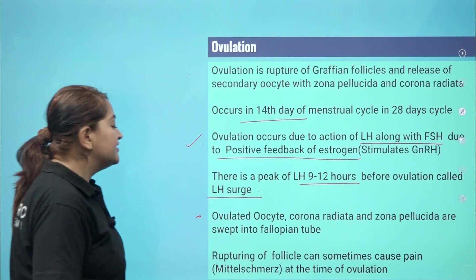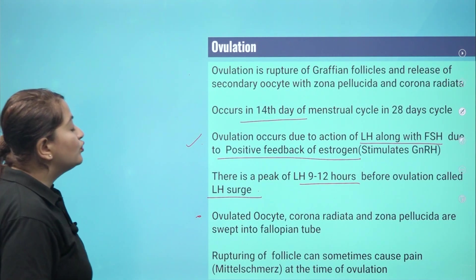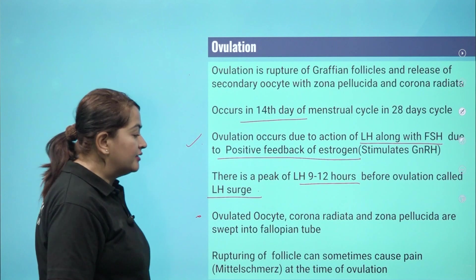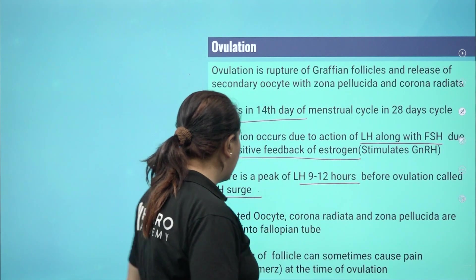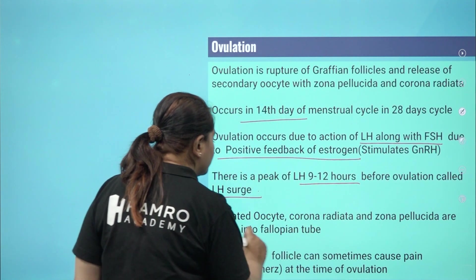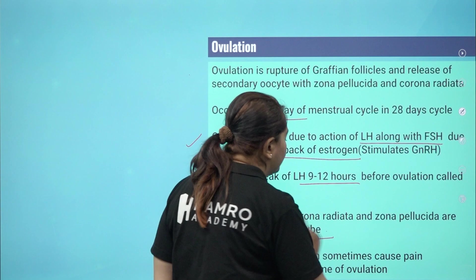There is a peak of LH occurring 9 to 12 hours before ovulation, which is called the LH surge. At ovulation, the oocyte along with the corona radiata and zona pellucida are swept into the fallopian tube.